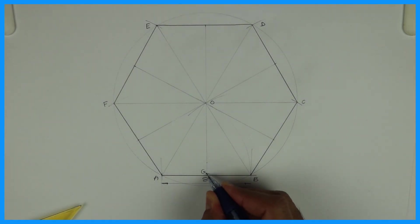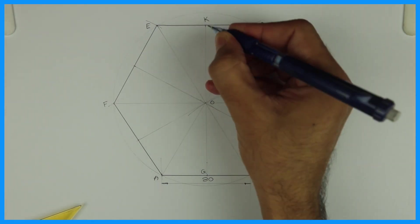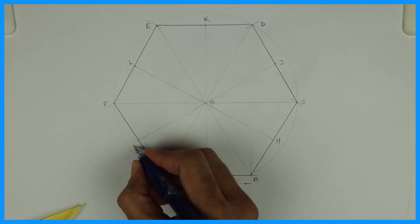After that, we'll name these points as G, H, J, K, L, M.